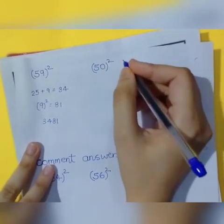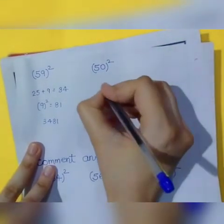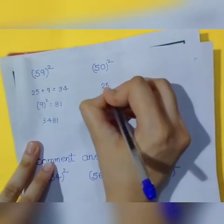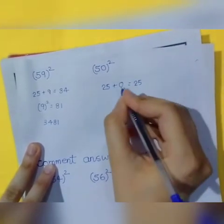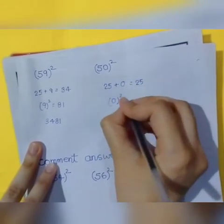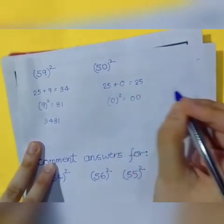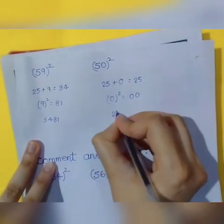After that, we have 50 whole square. We all know that it is very easy. You can do it with this technique. 25 plus the ones place, the result will be 25. If we use 0 whole square, then it will be 0. Remember that the result will be written with both ones and tens. The result is very important. If you combine the result, this will come: 2500.